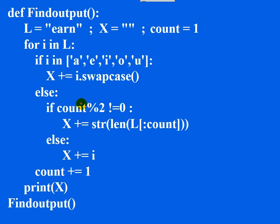Write the output of the program given here. In order to write the output, execution of a Python program starts and ends at the main function.